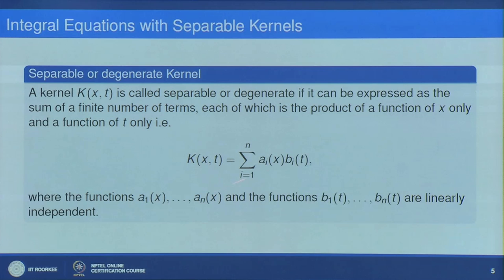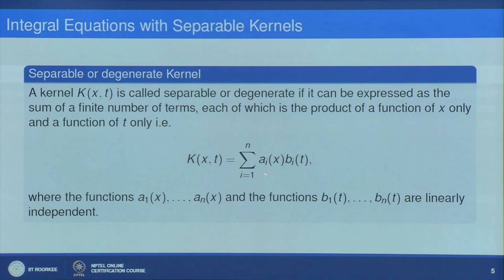We can assume that all aᵢ(x) are linearly independent, and similarly all b₁(t) to bₙ(t) are linearly independent. If they are not linearly independent, we can reduce the sum to fewer terms, since one of the aᵢ's can be written as a linear combination of others. Without loss of generality, we assume the functions present here are linearly independent — a₁ to aₙ are linearly independent and b₁ to bₙ are linearly independent.